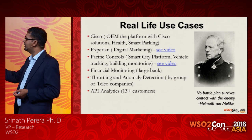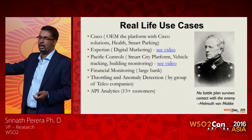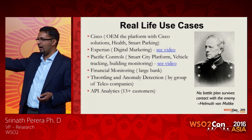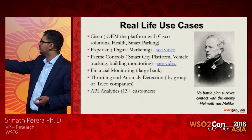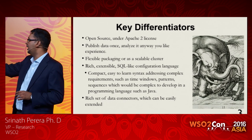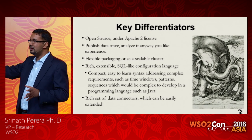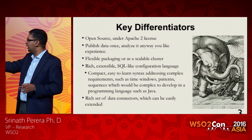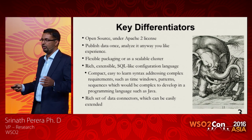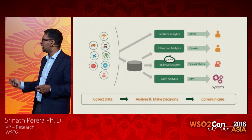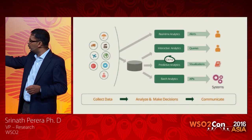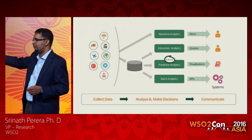These are some customers using the platform right now in production. Some names can't be shared and are given anonymously, but others are named. You can find customer talks at WSO2Con describing what they're doing. To summarize, our key differentiators are: we're open source, we let you publish once and analyze in any way, it's very scalable, we give you flexible SQL-like core languages, and we have a rich set of connectors to pull or push from any kind of data. This is the platform — publish once, do all kinds of analysis, and get results to the end user in many different ways. Everything in a single platform.